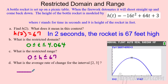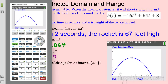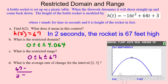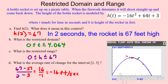To find the average rate of change from t = 2 to t = 3: we know h(2) = 67. Use Trace to find h(3) = 51. So the average rate of change is (51 − 67) / (3 − 2) = −16/1 = −16 feet per second. This means from 2 to 3 seconds, the rocket is losing 16 feet per second on average.